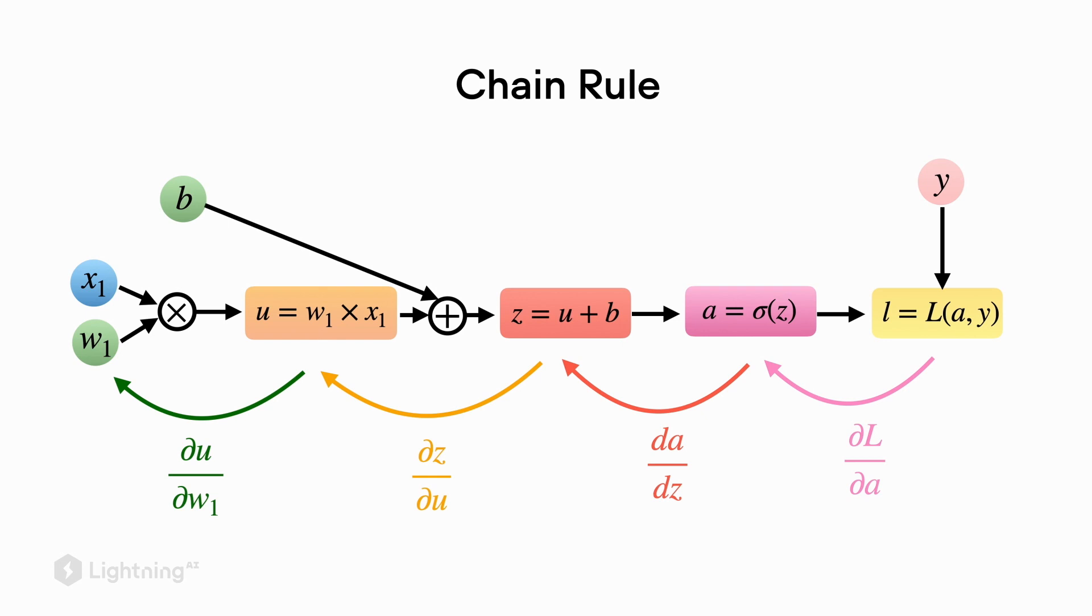And then finally we compute the partial derivative of u with respect to w1, which is one of the model parameters that we want to update.